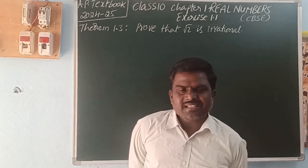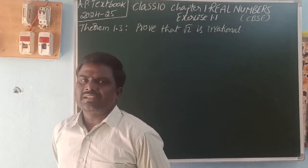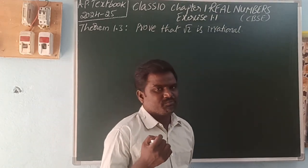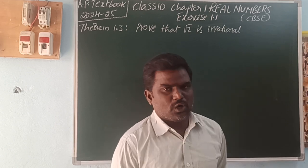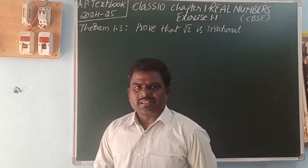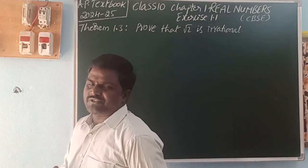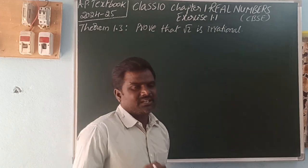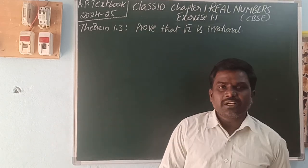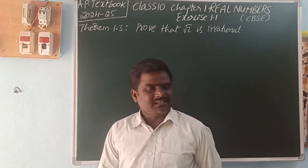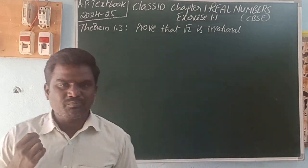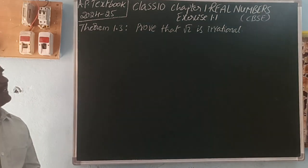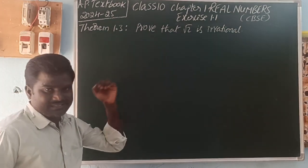So, irrational number means what? The number cannot be expressed in the form of p by q. The number which is non-terminating, non-recurring decimal number is called an irrational number — it cannot be written in the form of p by q.